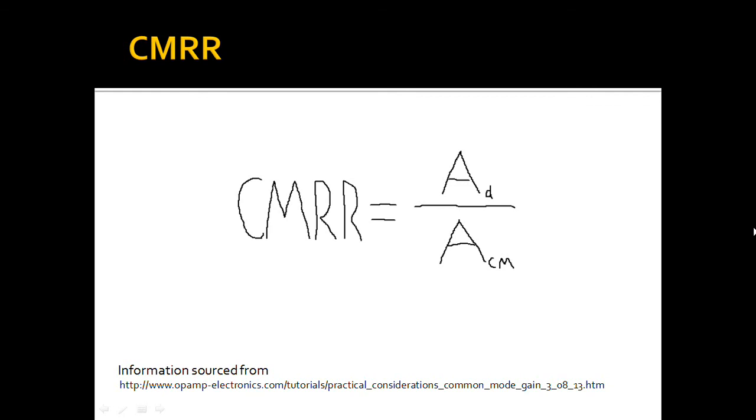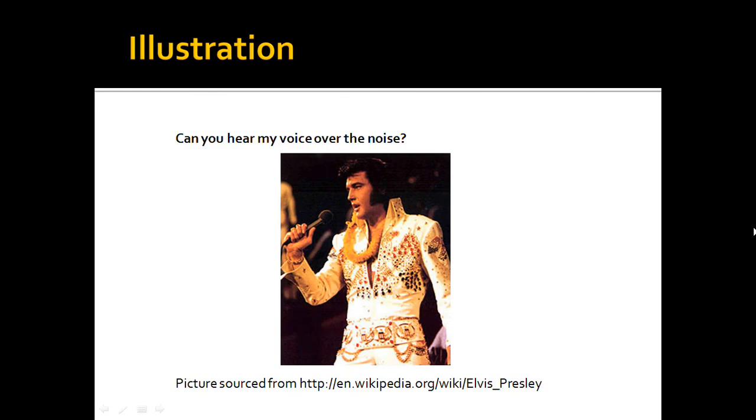To illustrate what a good Common Mode Rejection Ratio can do, we can take an important signal, say, my voice, and apply some noise. I'm pretty sure you're having trouble hearing me. My voice is lost in all the noise, and cannot be studied and recorded.